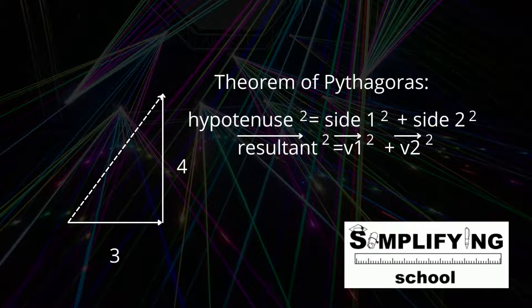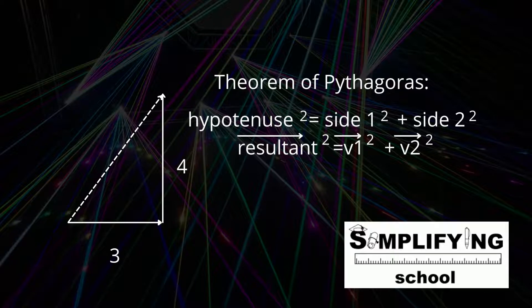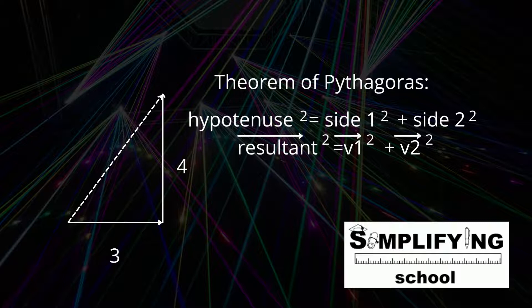Or, if we put it in scientific terms, vector 1 squared plus vector 2 squared is equal to the resultant vector squared. That is if vector 1 and vector 2 are the perpendicular vectors.